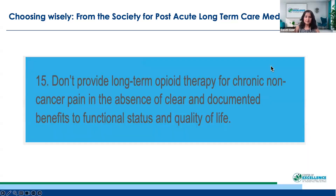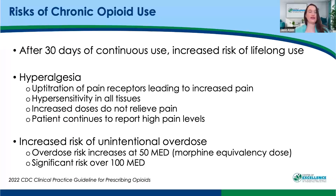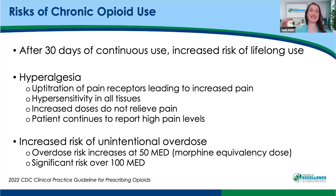We've already talked about a lot of the risks of chronic opioid use. One thing that really comes up when discussing tapers with patients is reviewing the risk so that they buy in on why tapering is important. After 30 days of continuous use, there's an increased risk of lifelong use — and most residents don't want lifelong use. Hyperalgesia is an issue many of us have seen in skilled nursing patients: up-titration of pain meds doesn't help because pain receptors are sensitized and patients feel increased pain throughout their body. Even as you escalate doses, pain stays at a seven or eight.